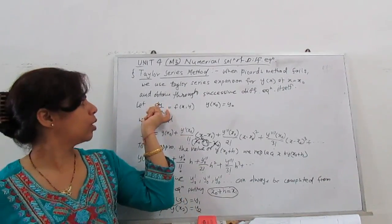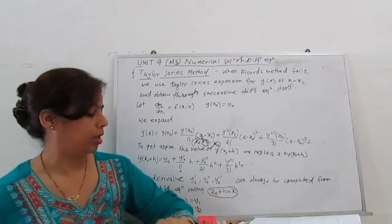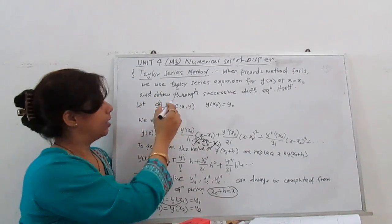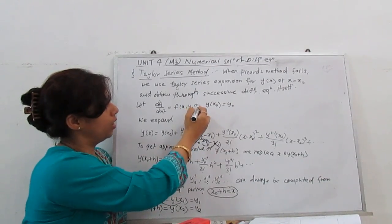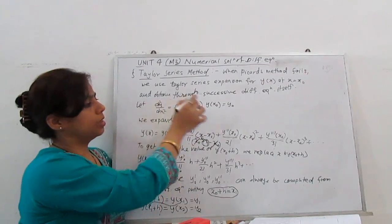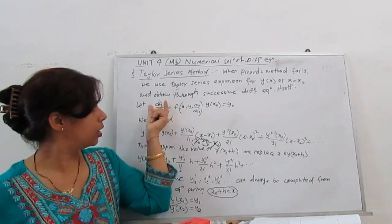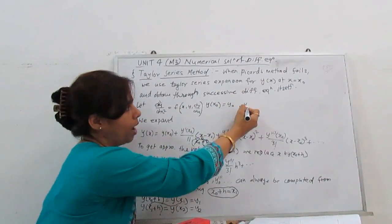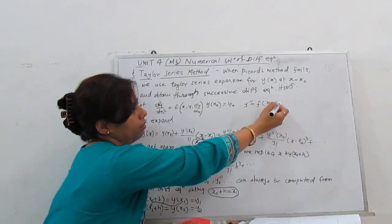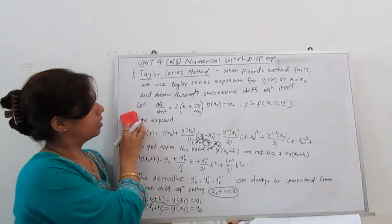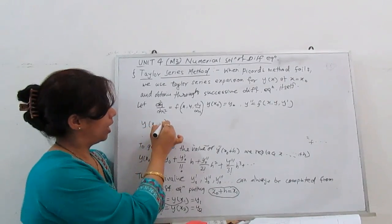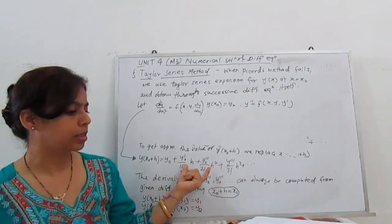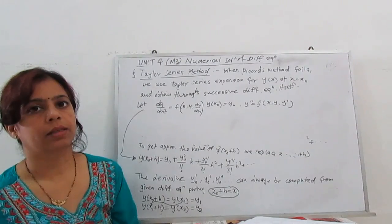This was for a first-order equation. If we have a second-order equation, for example d²y/dx² = f(x, y, dy/dx), or equivalently y'' = f(x, y, y'), with the same initial conditions, the Taylor series expansion y(x₀ + h) is given by the same formula. We can also solve simultaneous equations with Taylor series expansion.